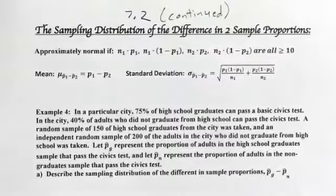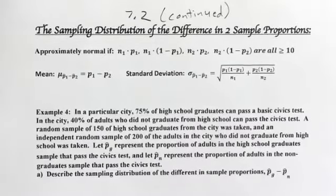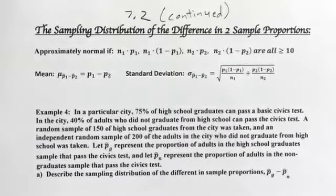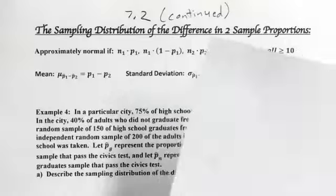Hello. We will now talk about the last part of Chapter 7, Section 2, which deals with the sampling distribution of the difference in two sample proportions. This may be a bit complicated, but I think you can figure it out if you try. So first, let me talk about some of the theory behind this before we do a problem.